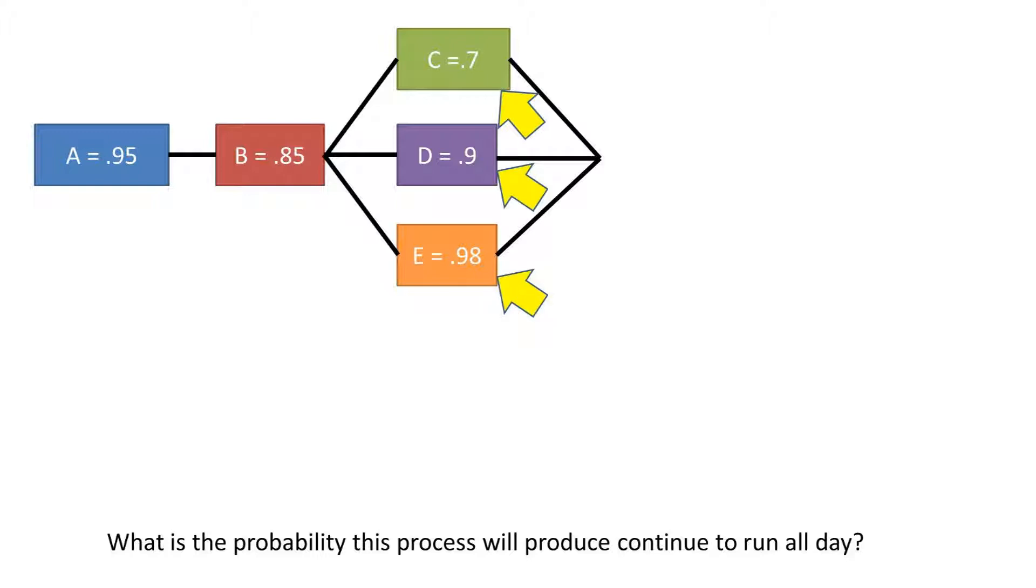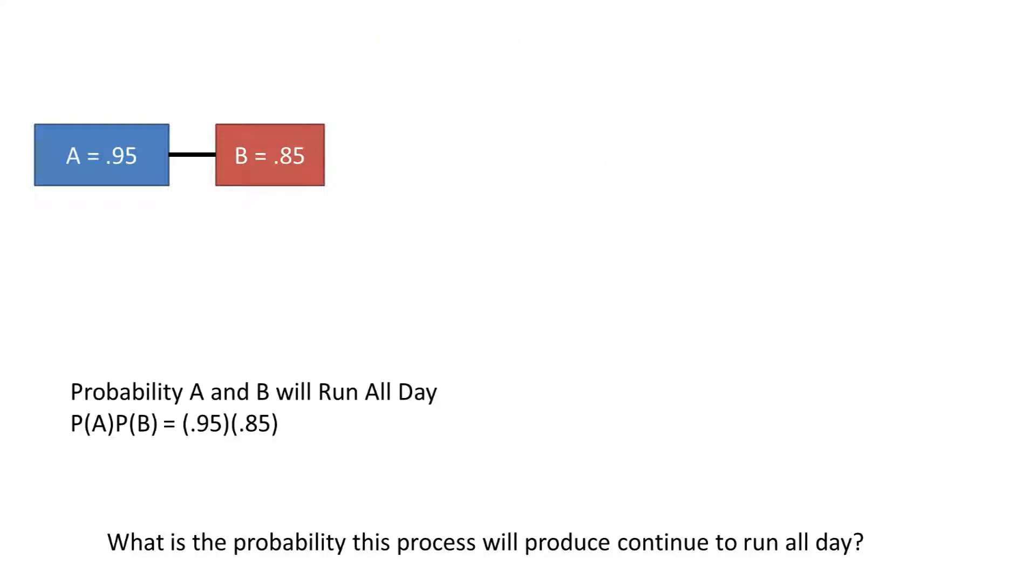These machines have a probability of 0.7, 0.9, and 0.98, respectively. So how do we find the probability that this process will continue to run? We basically segment this into subprocesses.